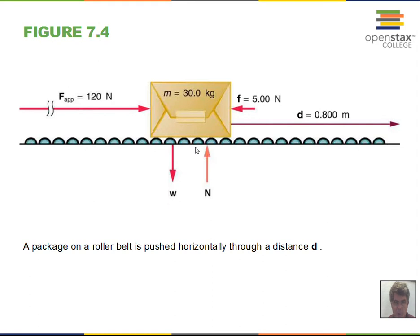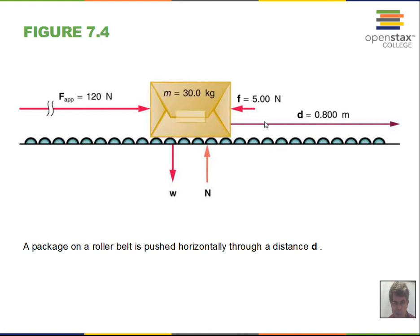Here is a box on a conveyor belt with low-friction rollers. There is gravitational weight mg downward and normal force upward; the box travels to the right. The normal force does zero work — it has no horizontal component. The weight mg also does zero work. However, an applied force of 120 Newtons does work: 120 Newtons times 0.8 meters displacement equals 96 Newton-meters, which is 96 joules. When we have Newtons times meters, we get joules.